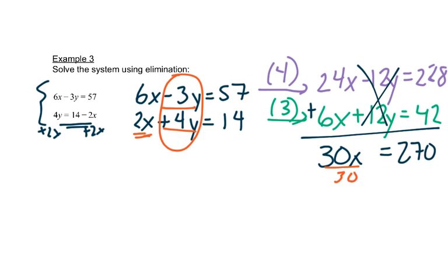So now I'm going to divide by 30. And x is equal to 9. So we'll use that, again, back in one of our beginning equations. It doesn't matter which one. Maybe the bottom one is easier this time.